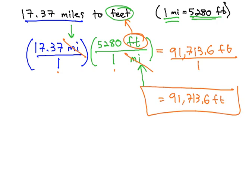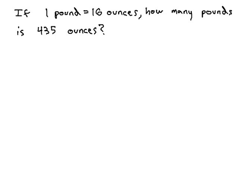Let's try another example where we can see this process worked through. If 1 pound is equal to 16 ounces, that's our conversion factor. We just have to decide which one's on top and which one's in the denominator. How many pounds is 435 ounces?